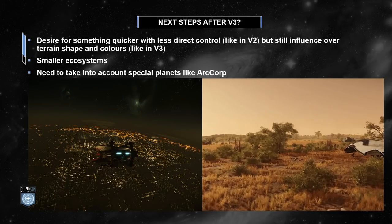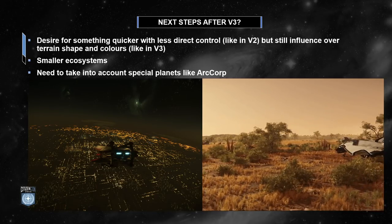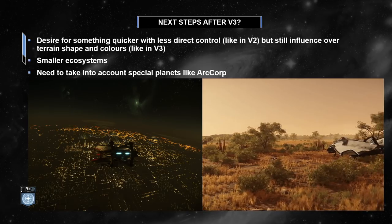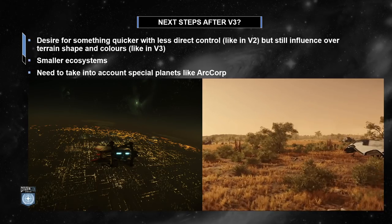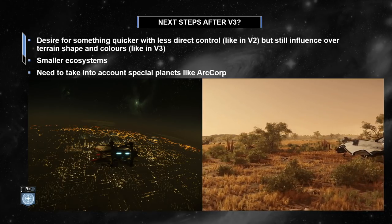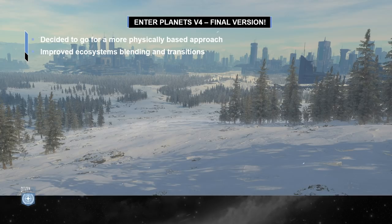What would be the next steps after version 3? We had the desire for something quicker to generate with less direct artistic control, like we had previously in V2, but still being able to influence terrain shape and colors like in V3. We wanted smaller ecosystems to get more details, improve blending and transitions, but still needed to take into account special planets like ArcCorp. So enter Planets V4, our final version. We decided to go for a more physically-based approach, wanting to improve on ecosystem blending and transitions. I'm handing over to Michel to give us an overview of V4.